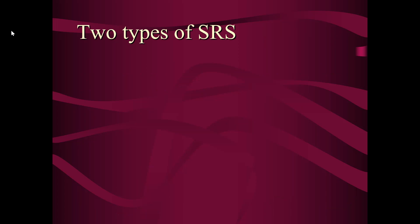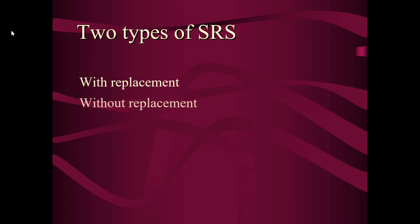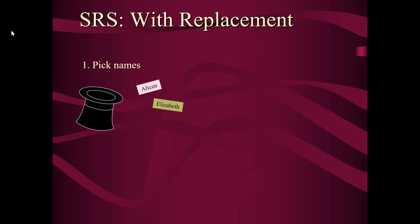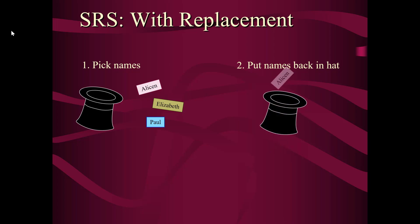There are two types of SRS: with replacement and without replacement. Let's talk about with replacement. We would pick names out of that hat — let's say Allison, Elizabeth, and Paul — and then we would put the names back in the hat.